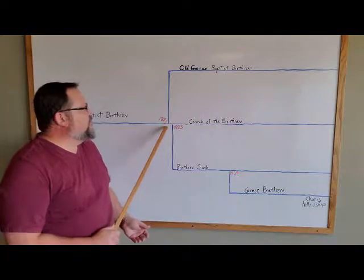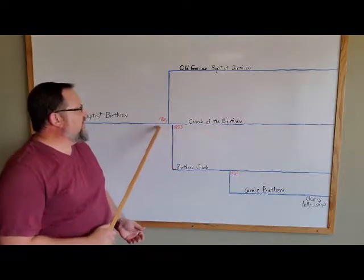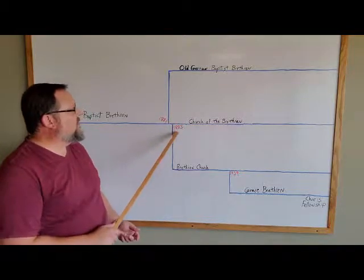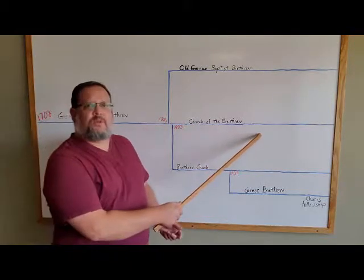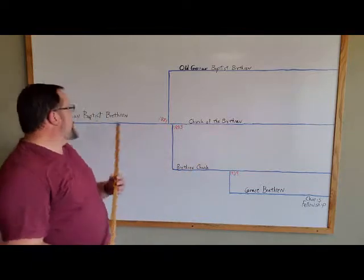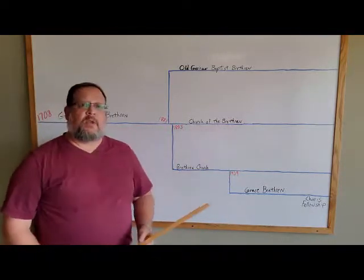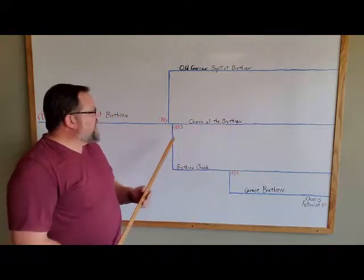The main group that split, or that came off of the split in 1881 to 1883, was the Church of the Brethren. They changed the name from simply German Baptist Brethren to the Church of the Brethren soon after that split.